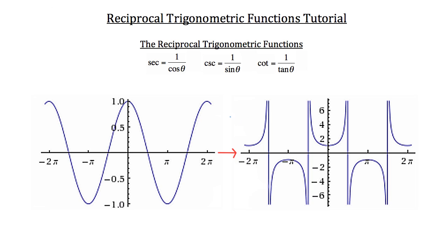On the right is the reciprocal of cosine: 1 over cosine theta gives us the graph of secant theta. Notice that with secant, instead of a nice gentle cosine curve, we actually have parabolas that alternate positions — a positive parabola, then a negative parabola, and so on.